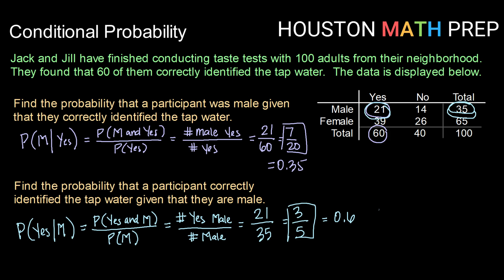So this example helps us illustrate the point that conditional probabilities do not necessarily work the same way if we switch them around. Here, the probability of being male given that the water was correctly identified is not the same as the probability the water was correctly identified given that the participant is male.